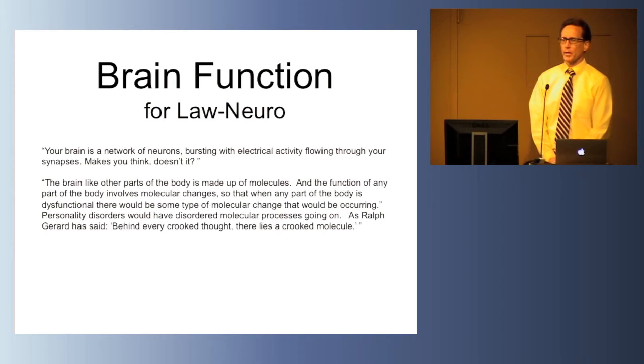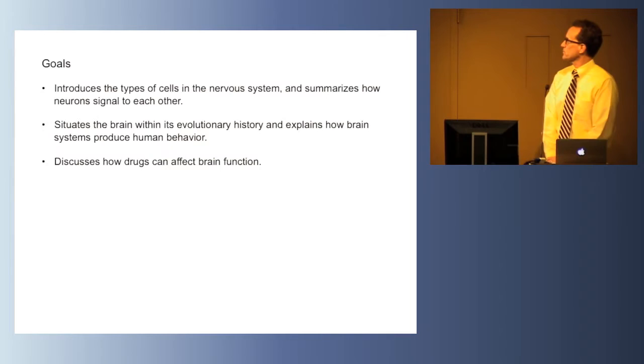This lecture is about brain function and has three goals: to introduce the types of cells in the nervous system and summarize how they signal to each other, to situate the brain within its evolutionary history to explain how brain systems produce behavior, and finally to discuss how drugs can affect brain function.